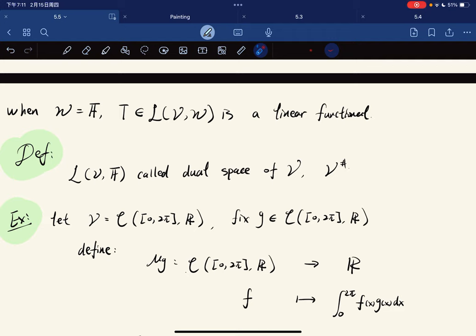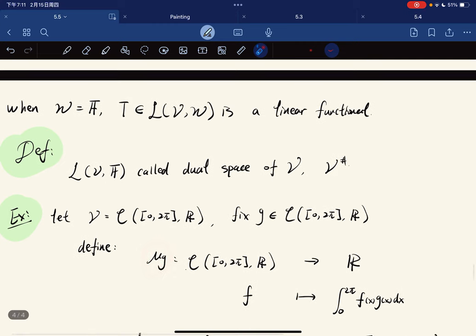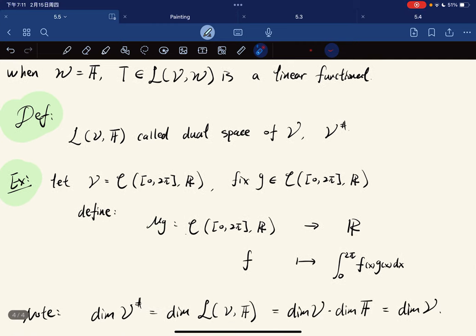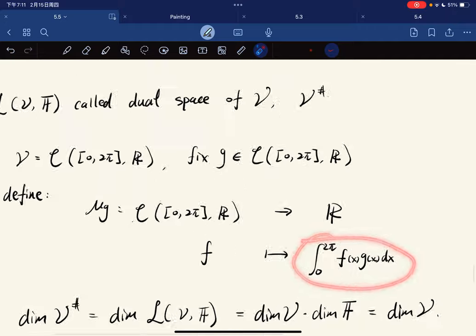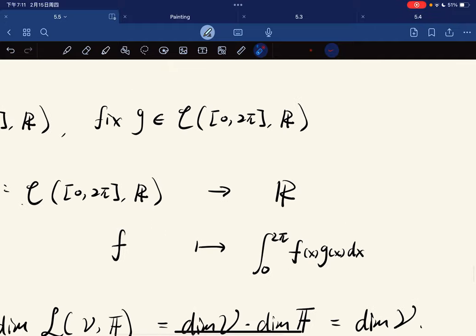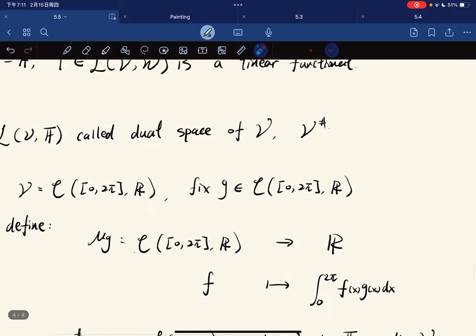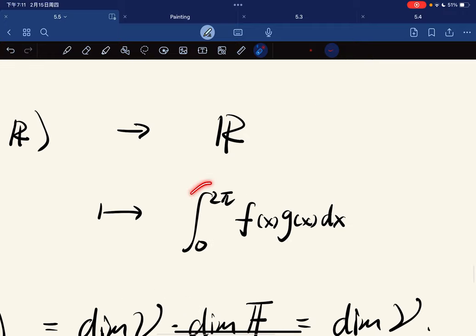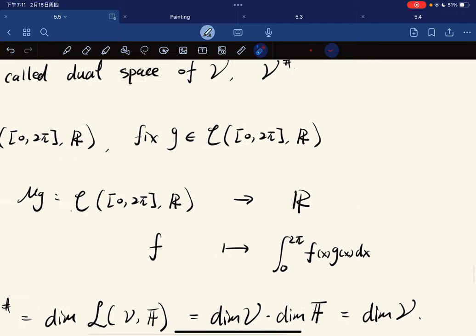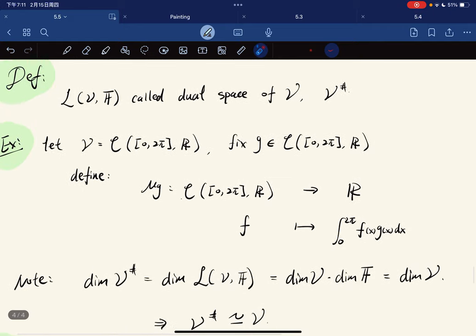Here's an example: for V the space of continuous functions, we fix one element. We define μ_g where given f, our output is the integral of f times g on [0, 2π]. This has some relation with convolution or Fourier analysis, but we're in linear algebra, so we don't talk too much about it.